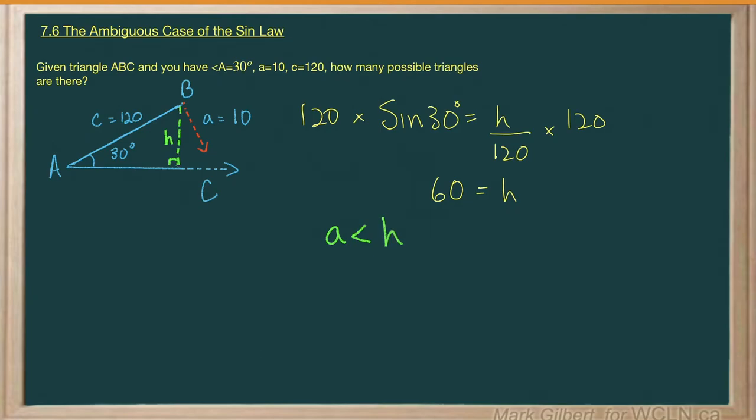So side A, what's going to happen is that it's just going to dangle like this, swinging along, going back and forth, without ever touching side B down here. Therefore, there is no triangle.